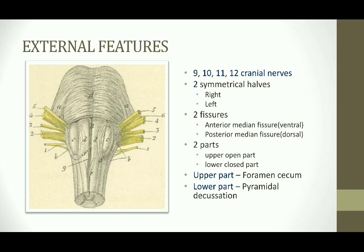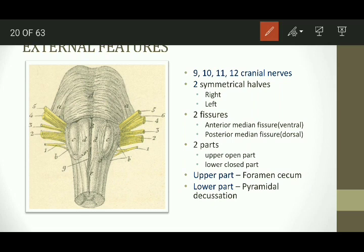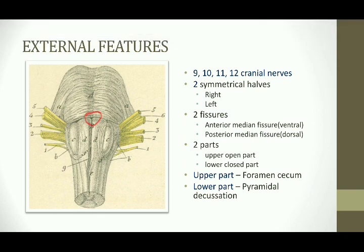The upper part of the medulla begins from the foramen cecum, which is a small triangular area present on the lower part of the pons. The anterior median fissure ends here and is also known as the ventromedian fissure. Similarly, the posterior median fissure, or sulcus, is a groove on the dorsal aspect of the medulla, also called the dorsal median sulcus. It ends at the obex.